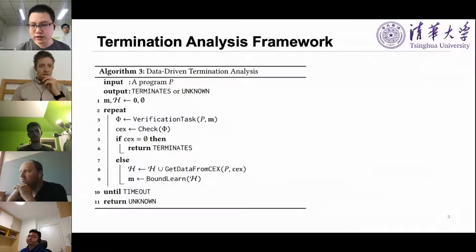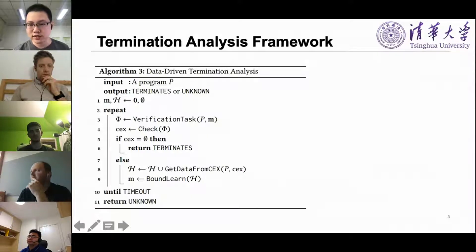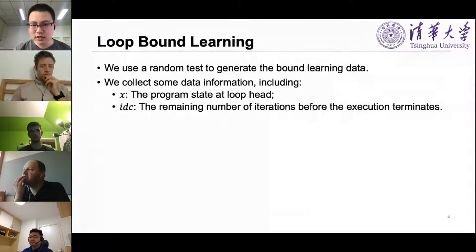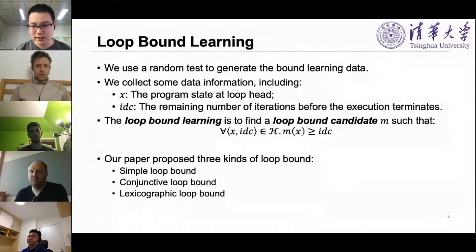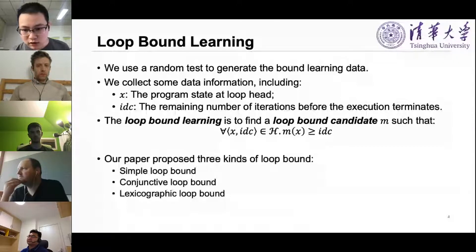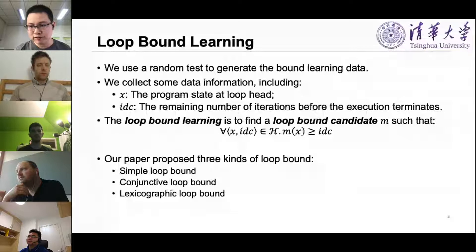There are two key problems: how to learn a loop bound, and how to check it. For bound learning, we use random testing to generate data, collecting two kinds of information: x, the program state at the loop head, and idc, the remaining number of iterations before execution terminates. The loop bound learning problem is to find a candidate m such that for all data points, m(x) ≥ idc. We propose three kinds of loop bounds: simple, conjunctive, and lexicographic — I will introduce the first two briefly.